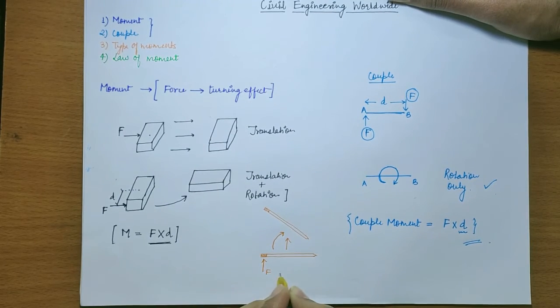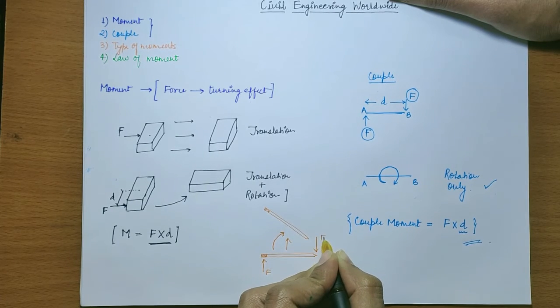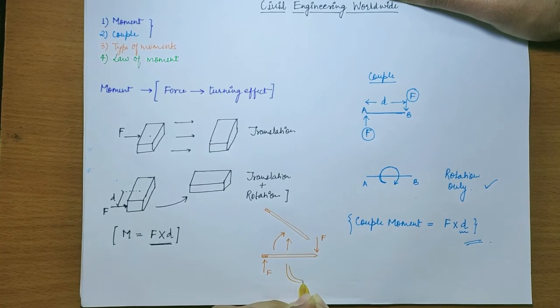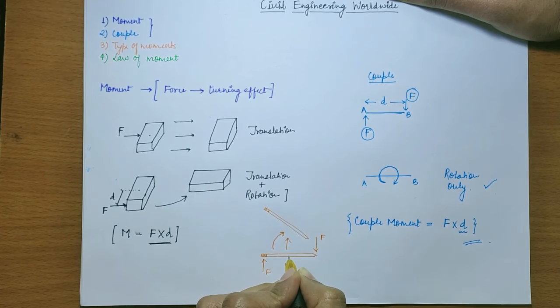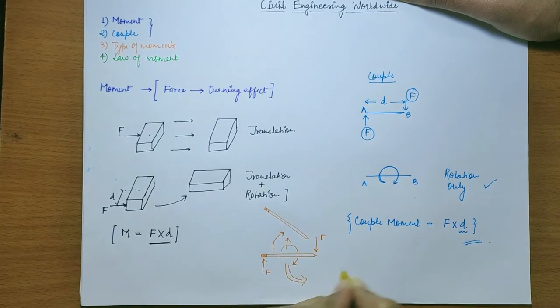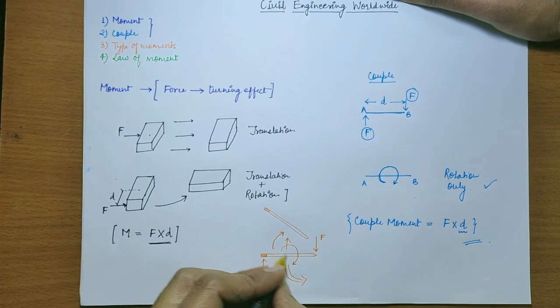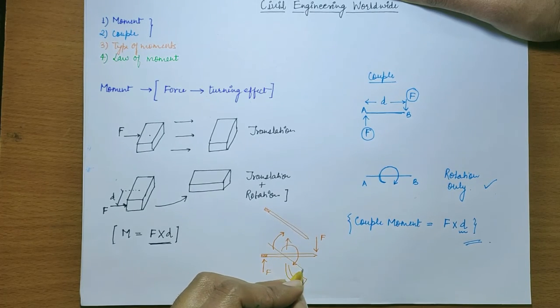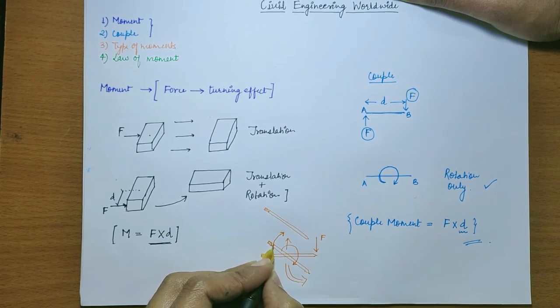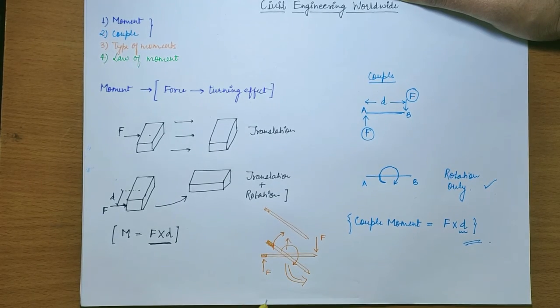But if on the same pencil we apply an equal and opposite force at the other end F, then this pencil will have a tendency to rotate like this and its final position will be here only but it will be rotated around this point.